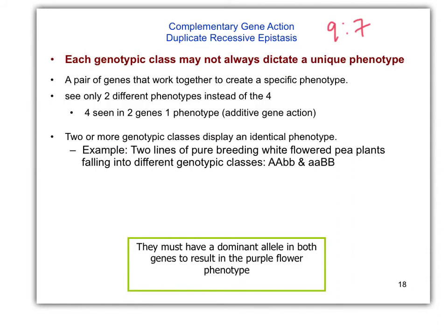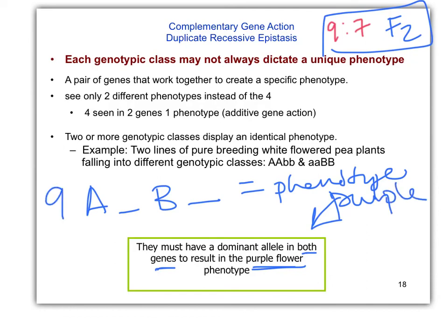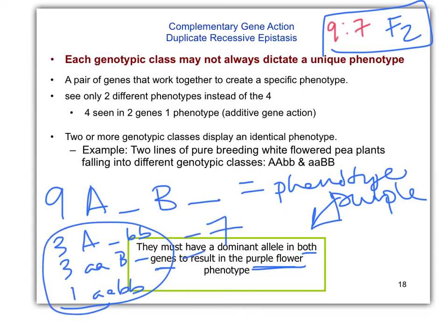We're going to talk about duplicate recessive epistasis, also known as complementary gene action. It has a classic F2 phenotypic ratio of 9:7. They must have a dominant allele in both genes to show a phenotype. The 3, 3, and 1 categories all come together — that equals 7 — giving the 9:7 ratio. Those 7 would all be white, albino, or no pigment.